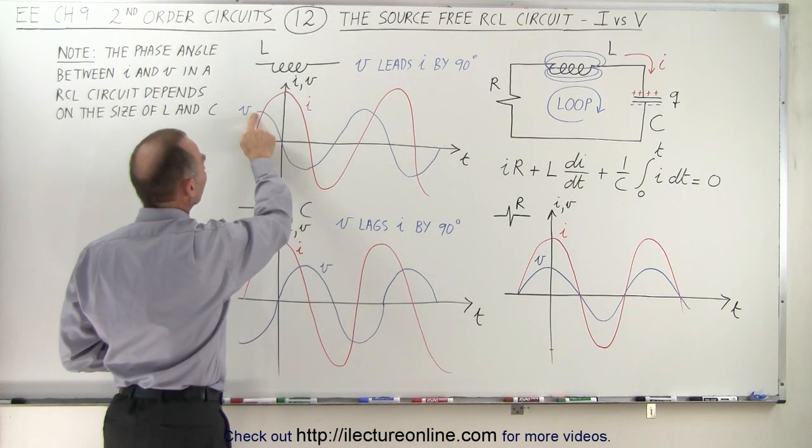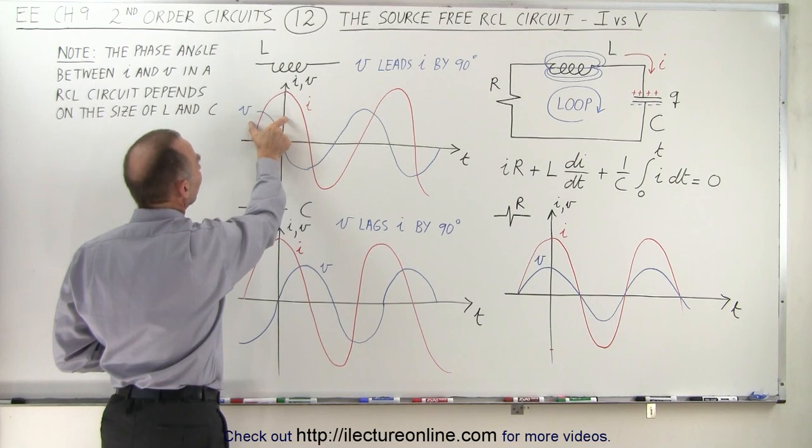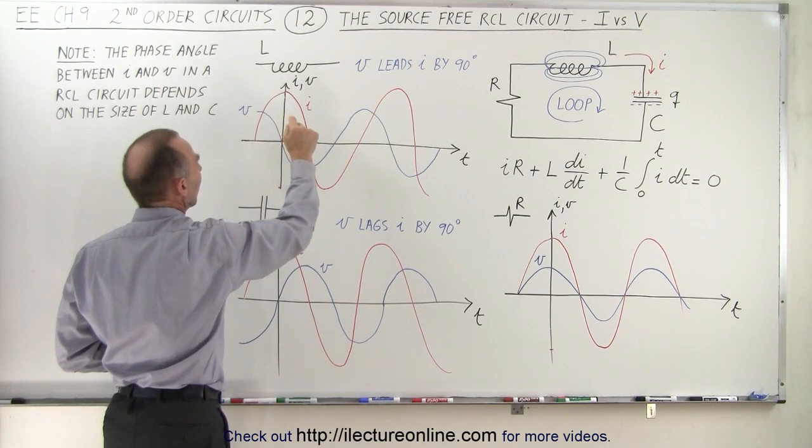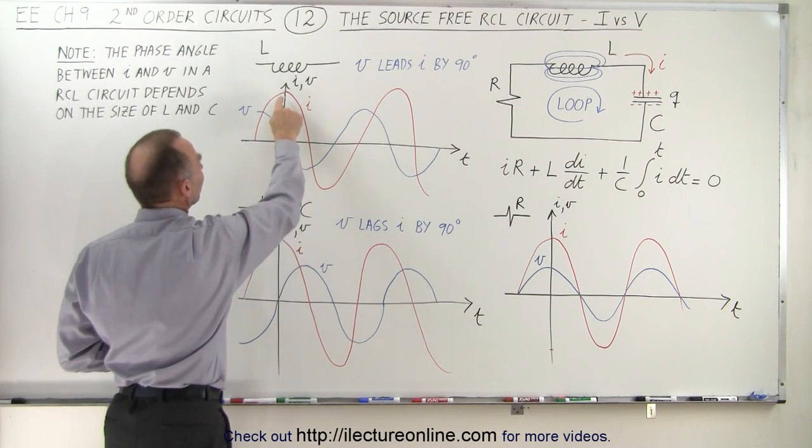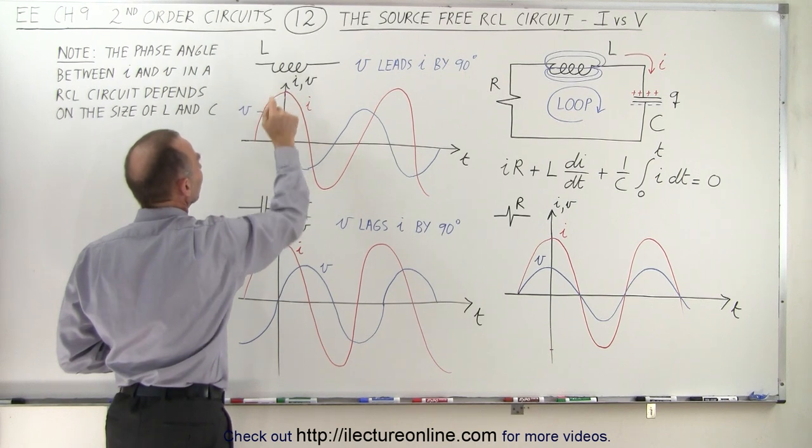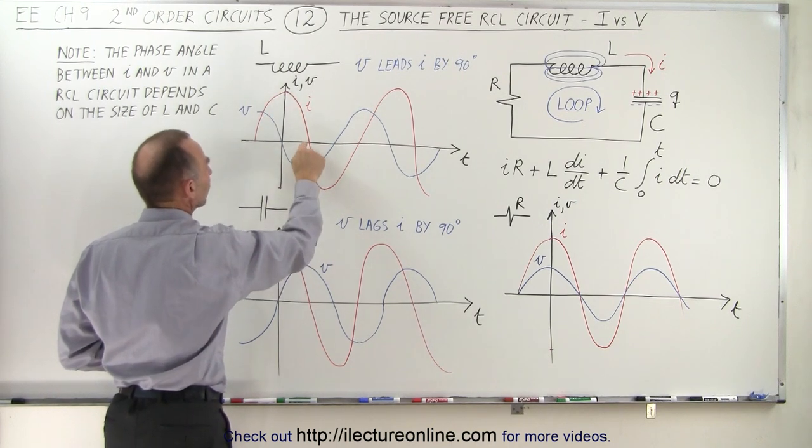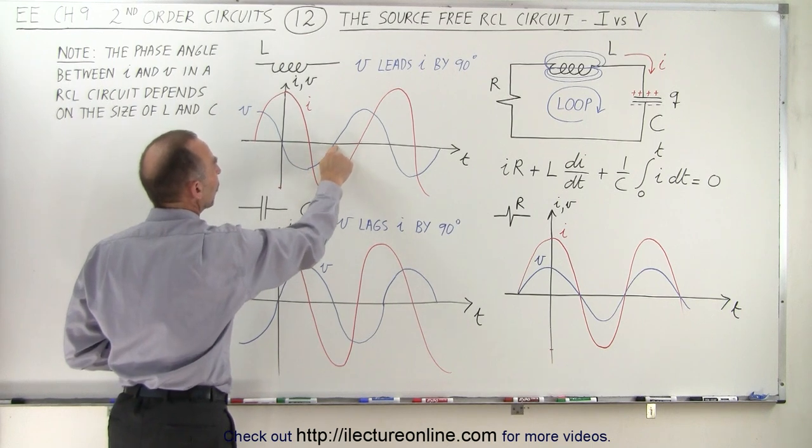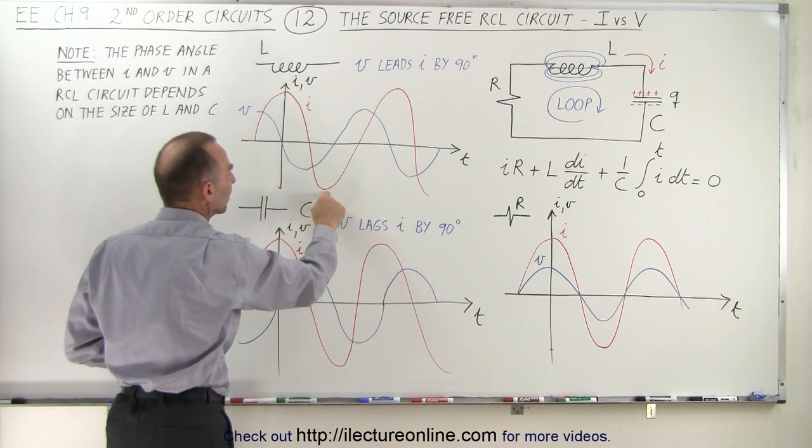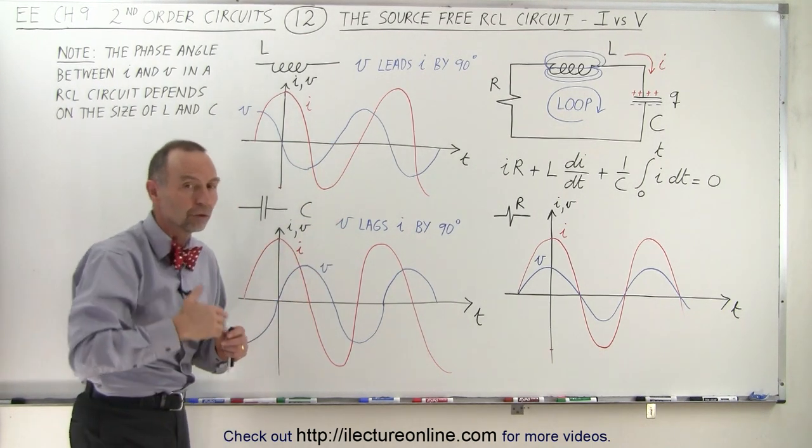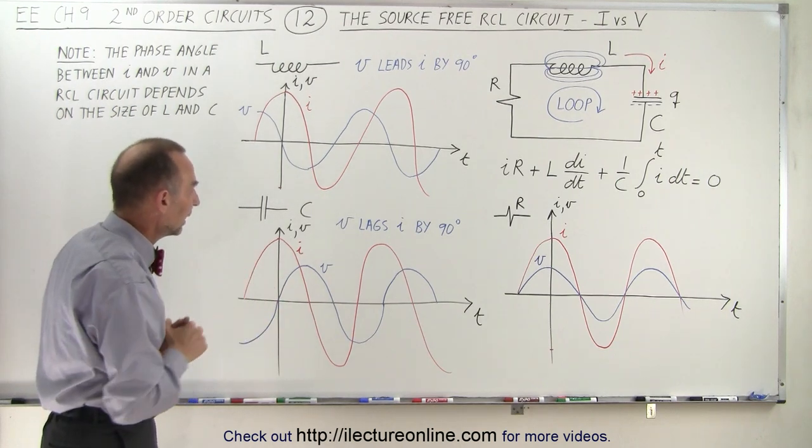So the voltage goes high first, then 90 degrees later in the phase, then the current goes high. The voltage goes to zero at the time that the current reaches a maximum. The voltage will be a maximum negative value when the current goes to zero. The voltage will go back to zero when the current reaches a maximum negative value and so forth. So the voltage always leads the current by 90 degrees.